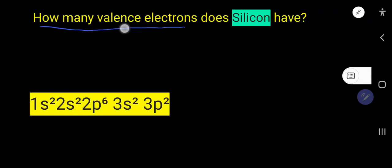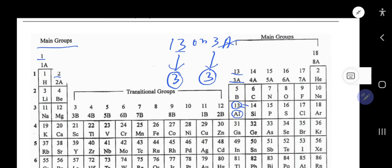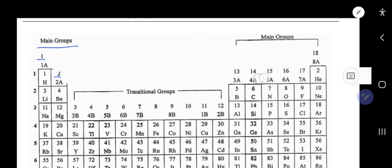How many valence electrons does silicon have? Silicon has four valence electrons. I will show you two methods to find out the valence electrons for silicon. First, I will use the periodic table to find out the valence electrons for silicon.